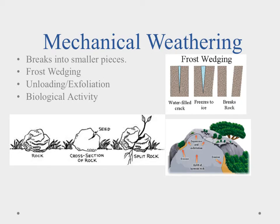The first thing we're going to talk about is mechanical weathering. Mechanical weathering is quite simply breaking rocks into smaller pieces. There's no chemical change going on — the rocks are still the same chemical composition. The only difference is they've gone from one big piece into a bunch of little pieces. There are three processes that cause mechanical weathering.